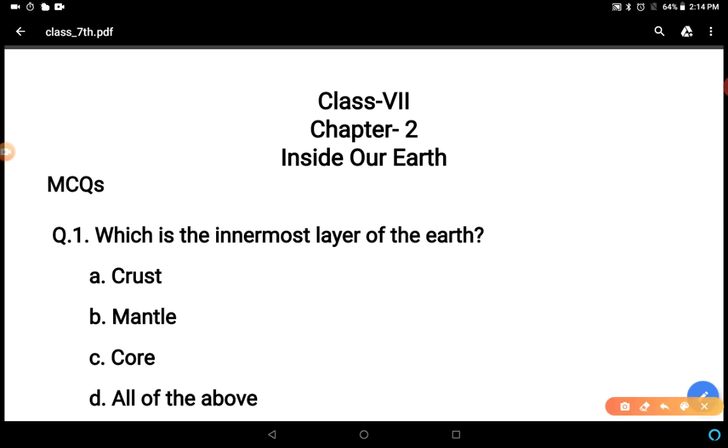Take first question: which is the innermost layer of the earth? The options are crust, mantle, core, all of above. The innermost layer is core - first crust, then mantle and then core. C is the correct answer.